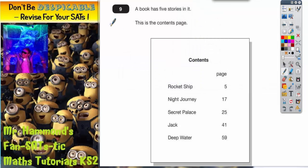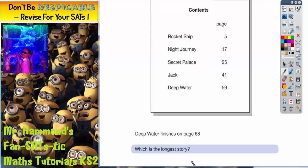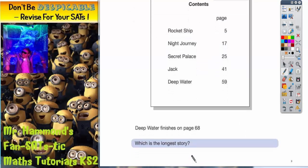Question 9 is a real life question, it's about a book. So a book has got 5 stories in it, this is the contents page. Just like you find in most books, contents page. Let's scroll down and have a look at what we've got to do. Here it says, deep water finishes on page 68. Which is the longest story?